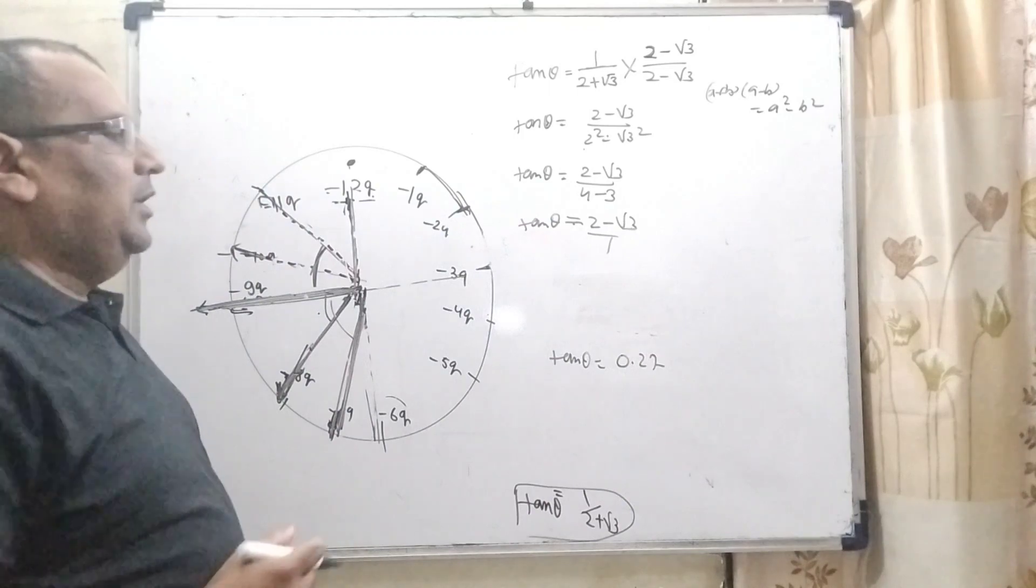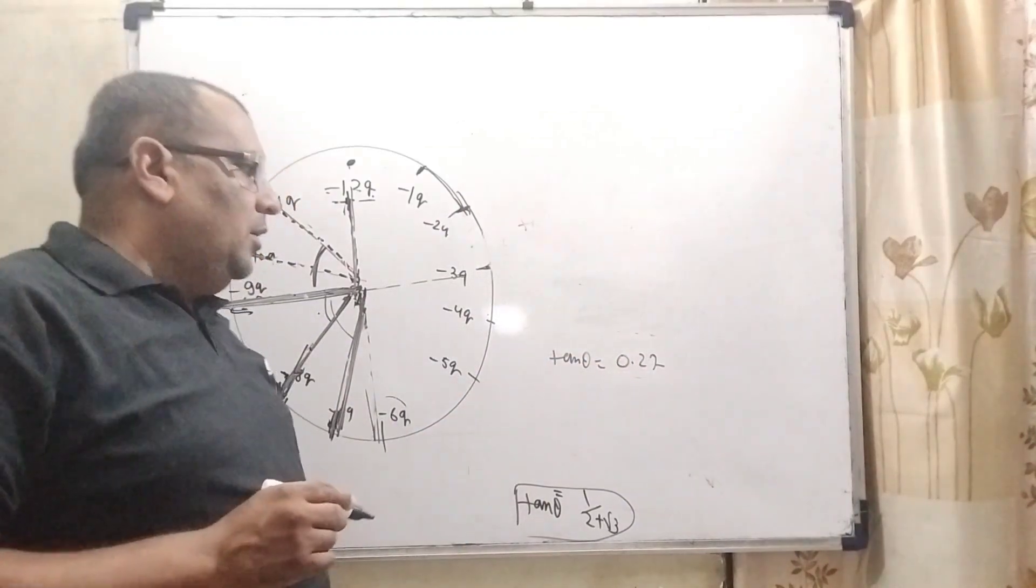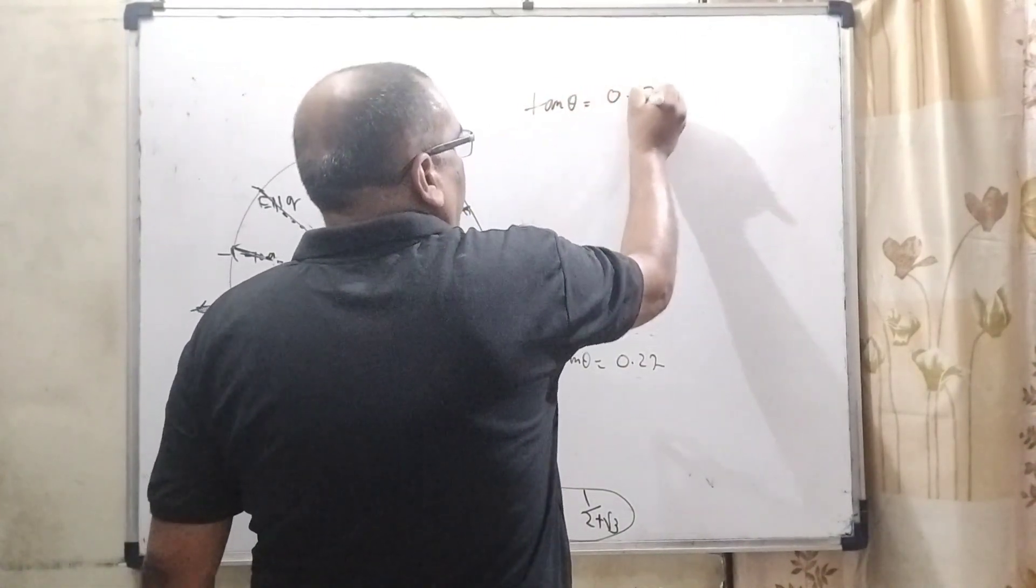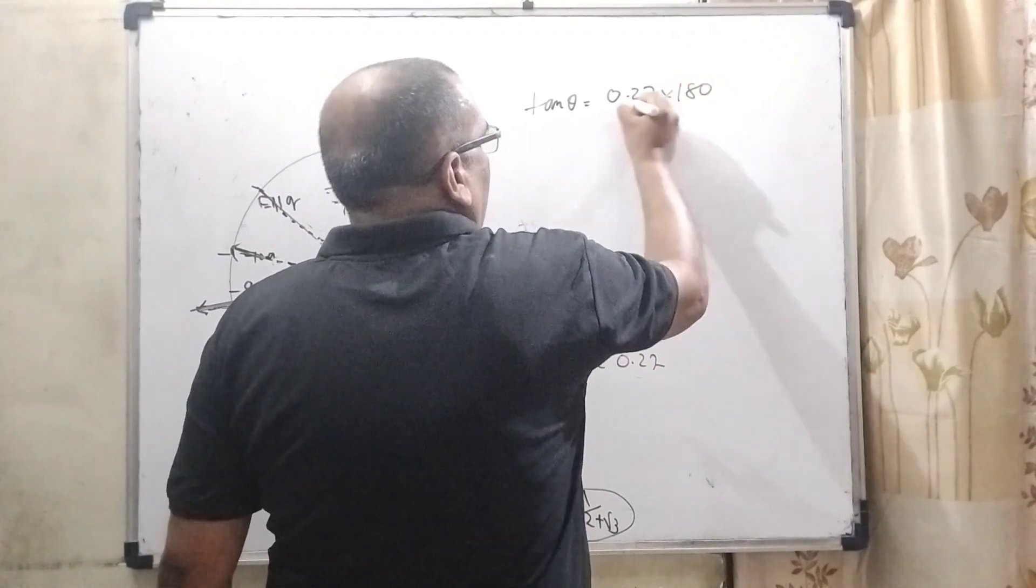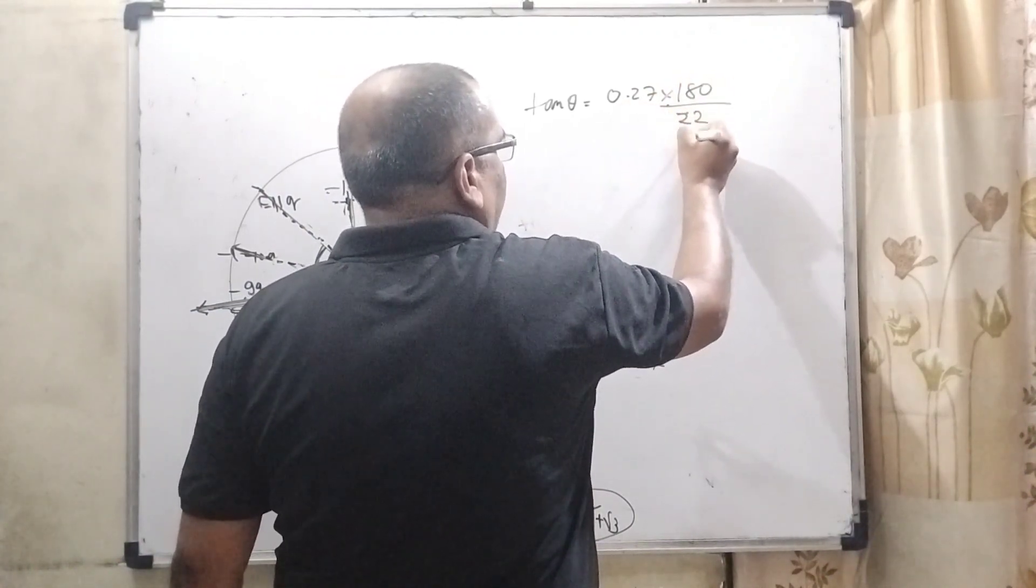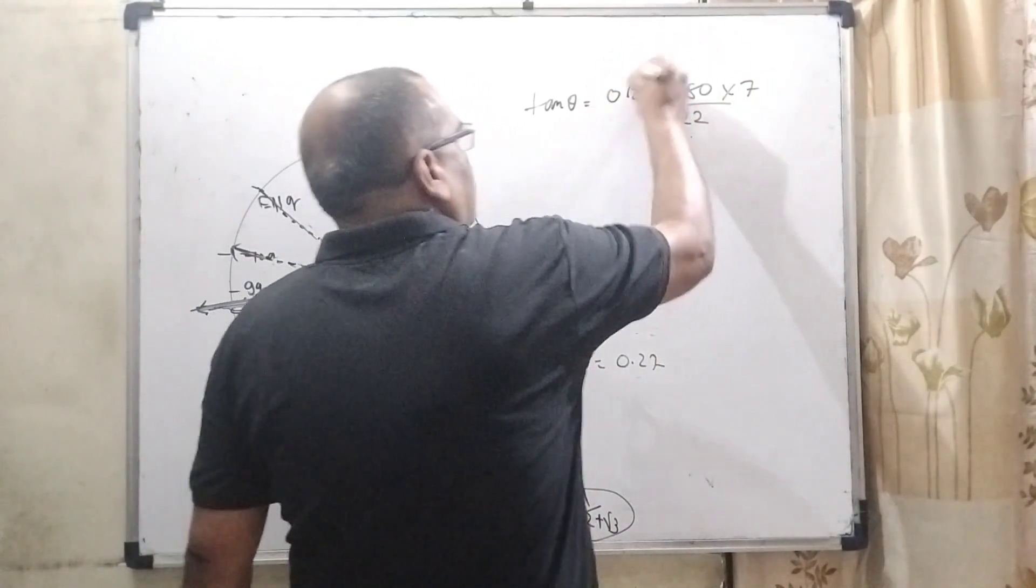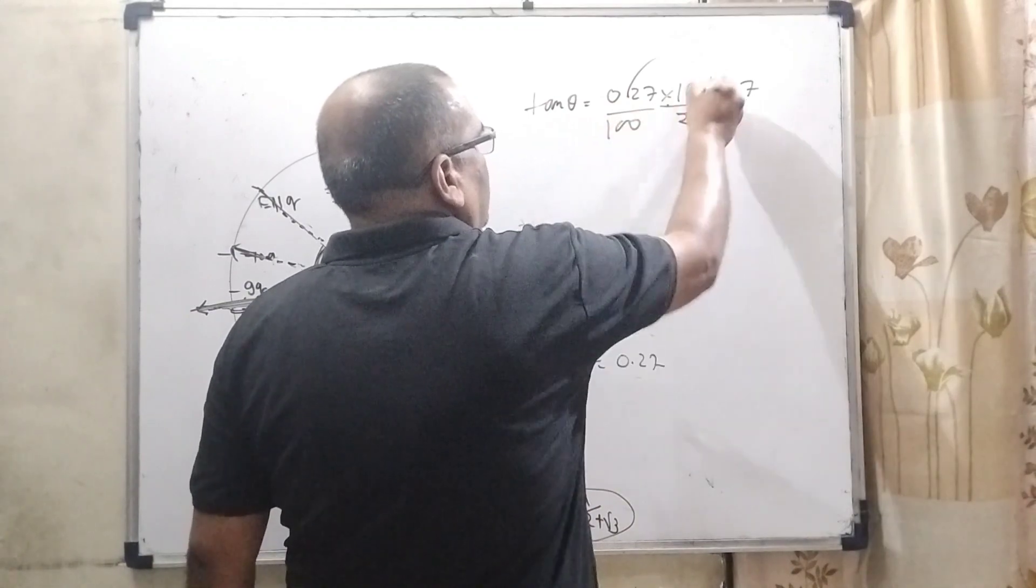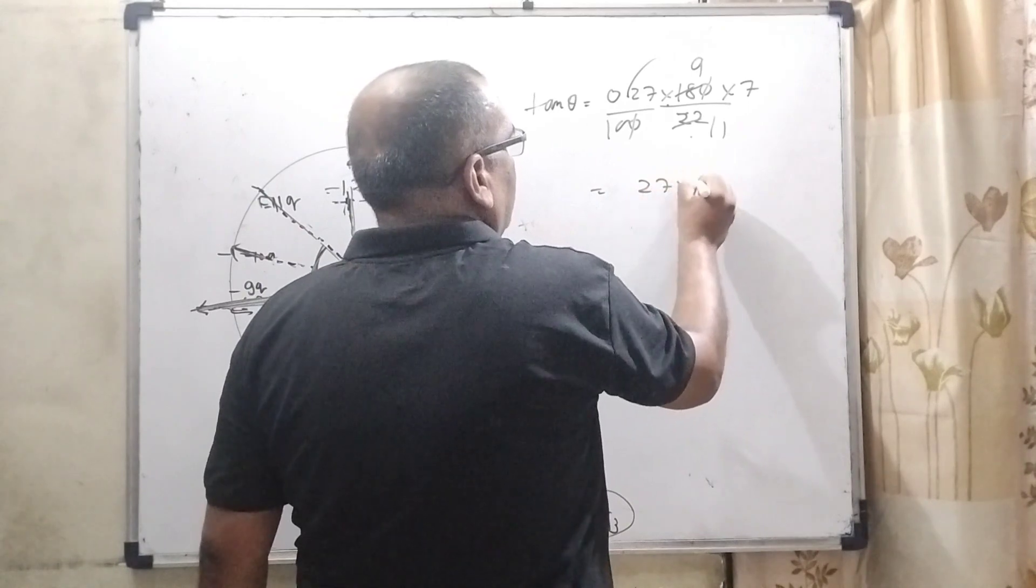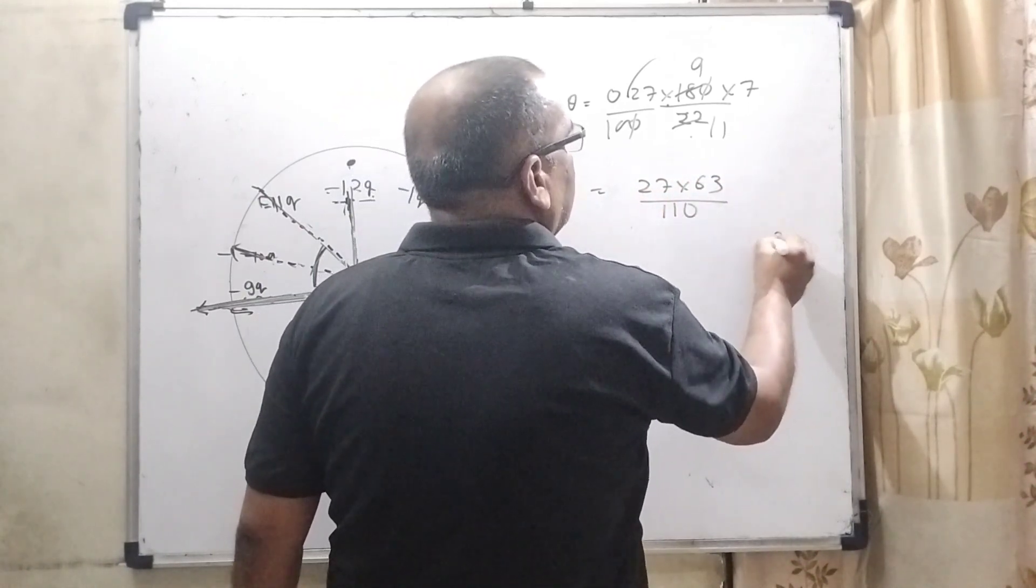Now convert into, here this is in radian, now convert into degree. Now help convert to radian into degree by multiply 180 and divided by pi. And what is the value of pi? 22 by 7 upon reaches to the numerator. This decimal is removed, 0, 0 cancel out, 2 lines are 18, this is 1, 27 into 63.